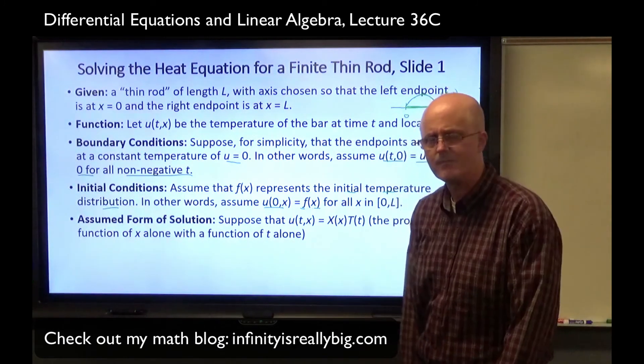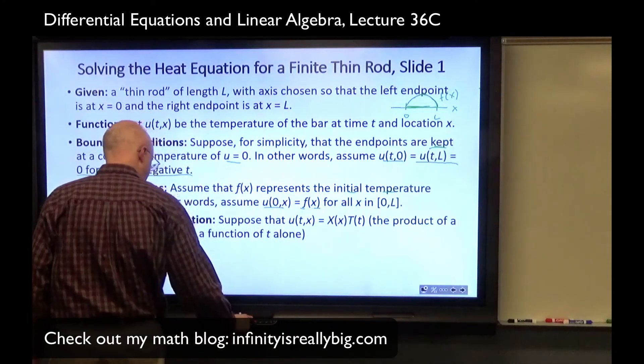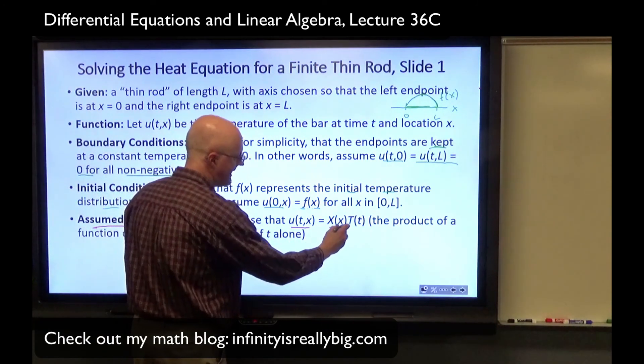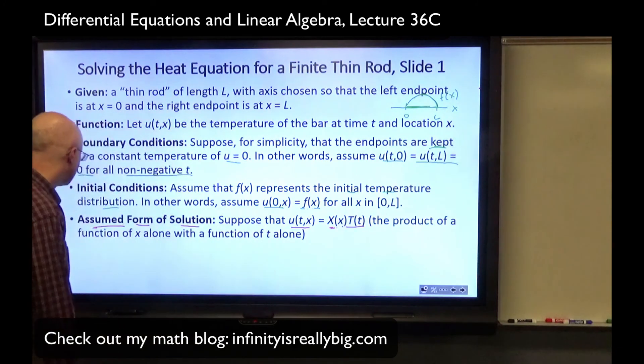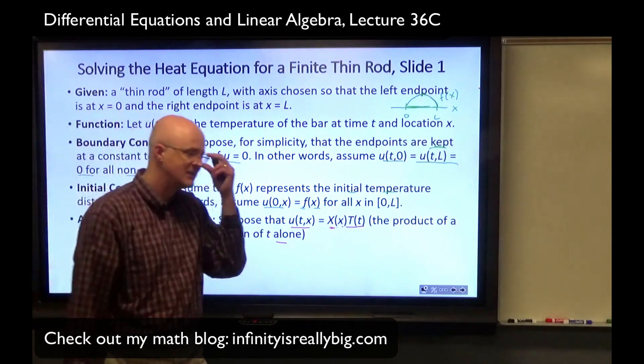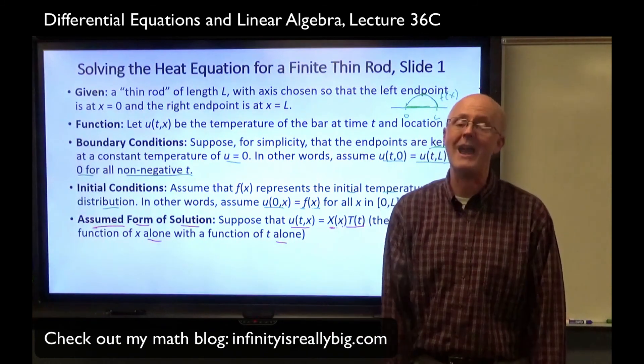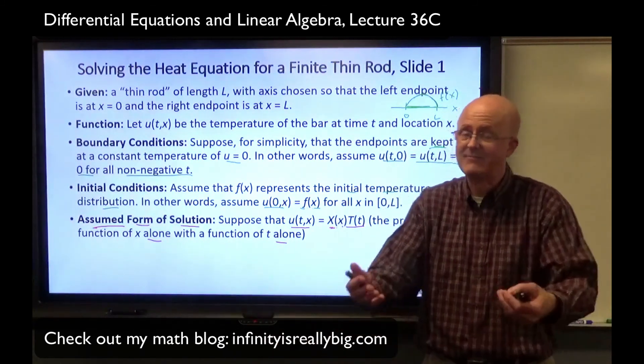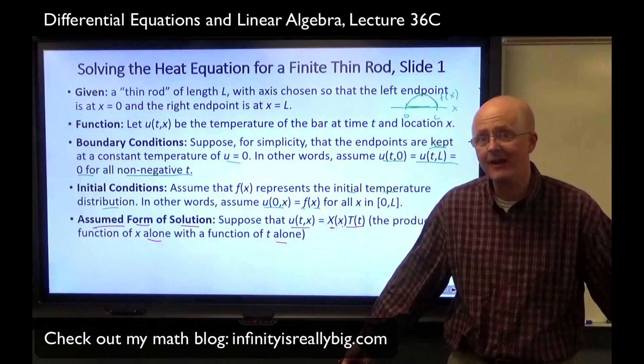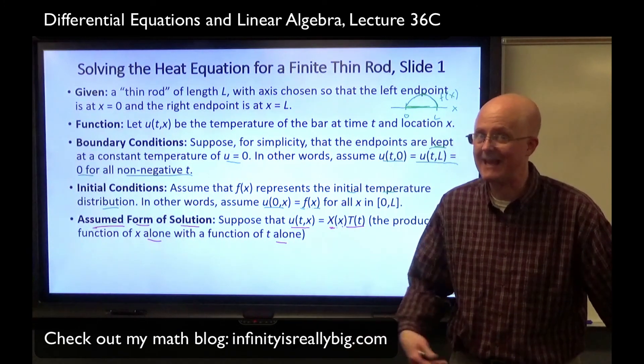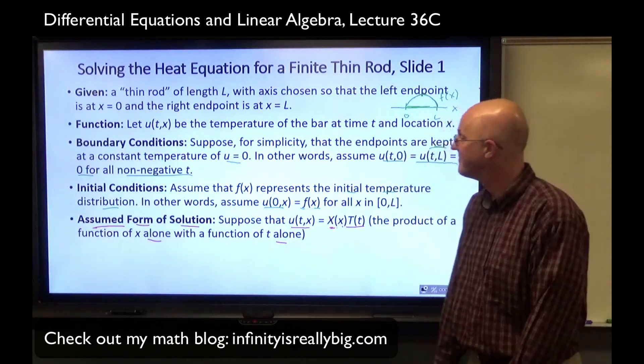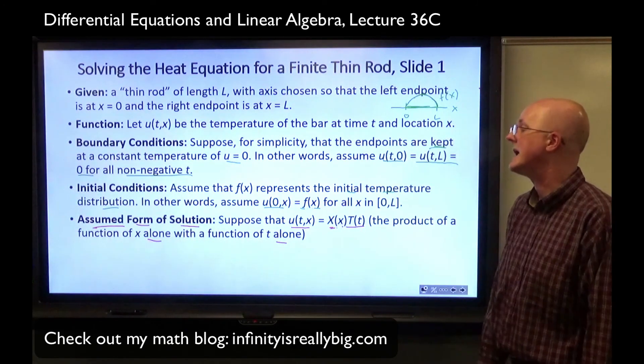Here's the vicious step. Why can we do this? Assumed form of solution is that u(t,x) is a product, capital X of x times capital T of t, a product of a function of x alone with a function of t alone. How in the world is such an assumption justified? The answer is because it ends up working. That's why when you're problem-solving, sometimes you just have to try things and hope that they work. And once in a while, your hope might be fulfilled, and they do work.